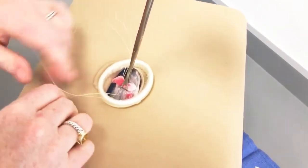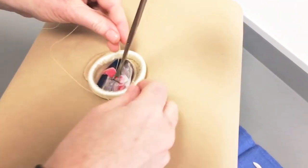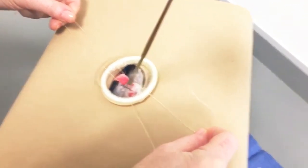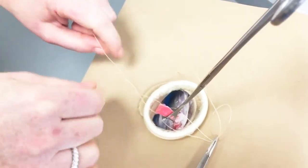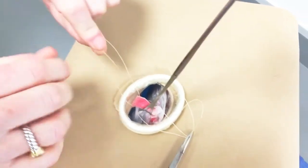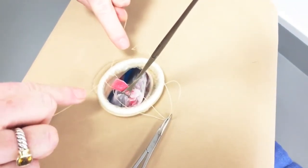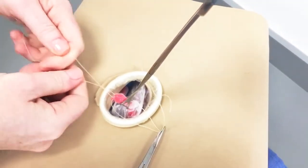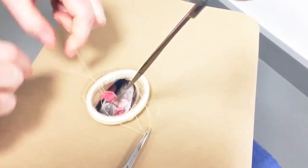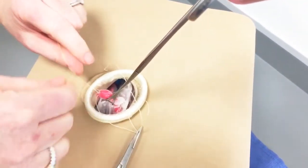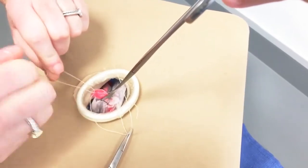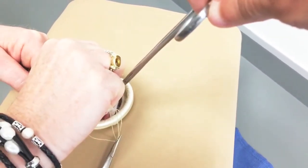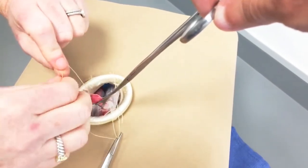Interns are often first assistants for postpartum tubal ligations and it may be one of the first surgical procedures that they learn. As experienced OBGYNs know, the postpartum fallopian tube can be edematous, highly vascular, and easily damaged during these procedures if excessive force is applied. In addition, the round ligament can easily be mistaken for the fallopian tube if proper surgical technique is not followed.